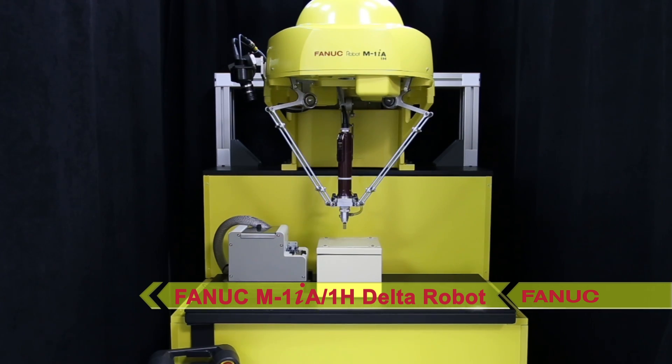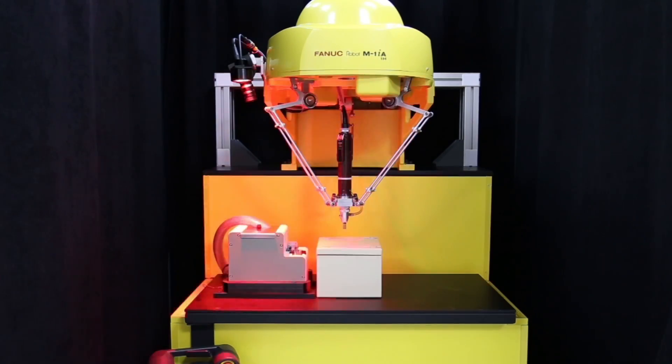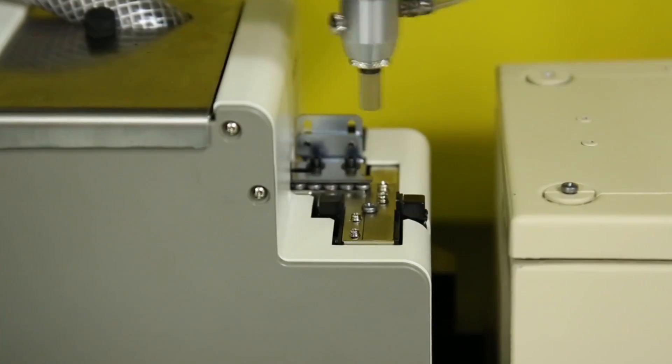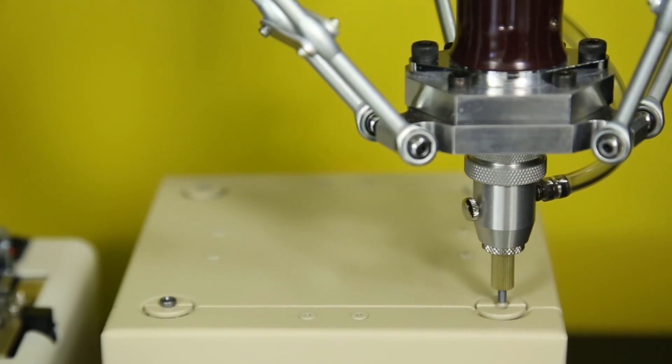In this system, the robot picks individual screws from a screw feeder and uses a nut runner to drive the screws into four points on a terminal box for assembly.